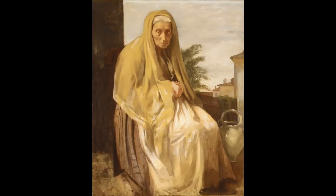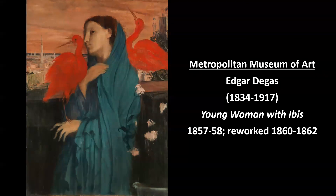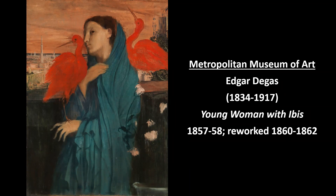Degas lived in Italy from 1856 to 1859. This is a really beautiful painting from 1857 to 1858. One of the things about Degas is that he was a real perfectionist — he would oftentimes rework paintings, and would even ask friends if he could take paintings back from their walls to rework them. He worked on this painting from 1857 to 1858, then two years later decided to work on it some more.